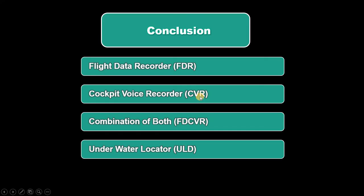Coming to the cockpit voice recorder: the cockpit voice recorder is another important feature. Four channels of cockpit audio are recorded from the pilot, co-pilot, and two other microphones inserted into the cockpit. These can record up to four hours of voice recording into the CSMU. If both the flight data recorder and the cockpit voice recorder are on the same chassis, that is called the flight data cockpit voice recorder. The flight data cockpit voice recorder has an important utility that provides the exact location of the aircraft if it is crashed into the deep sea — that is called the underwater locator beacon.